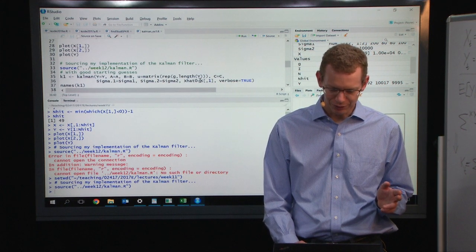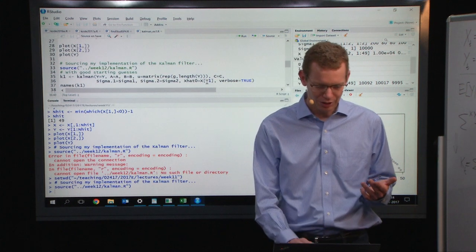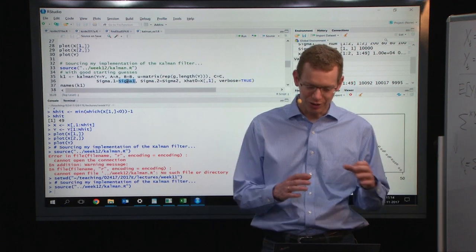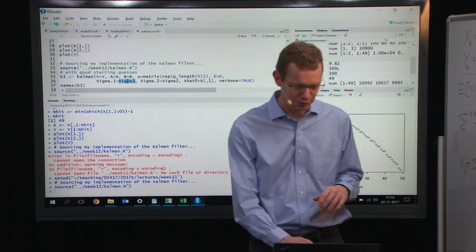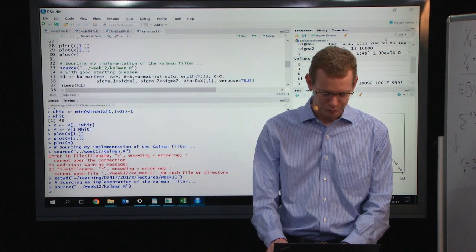Here I will use starting guesses. I'll just use the first observation as my initial position, and I'll use a sigma one. I will use not zero that I'm not knowing exactly where I'm at, but just very small sigma, which is the system sigma.